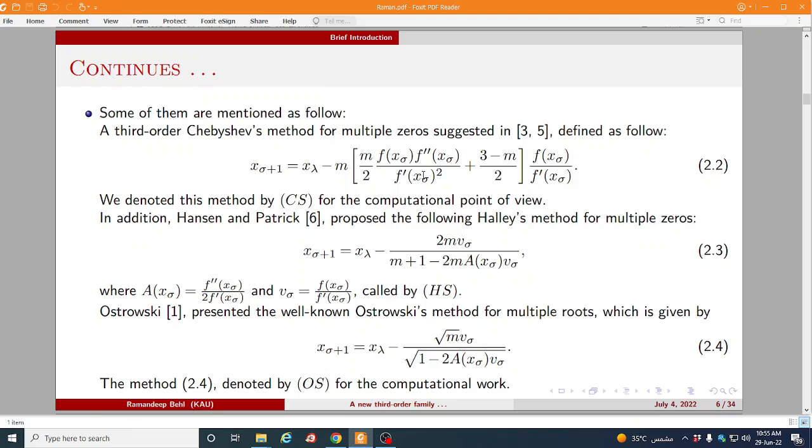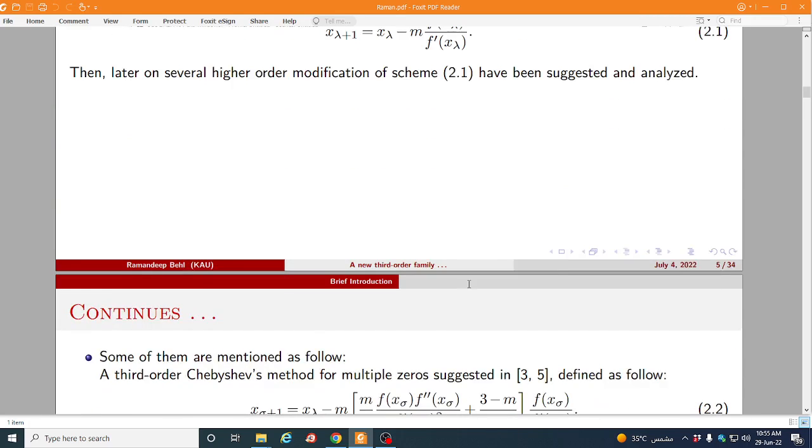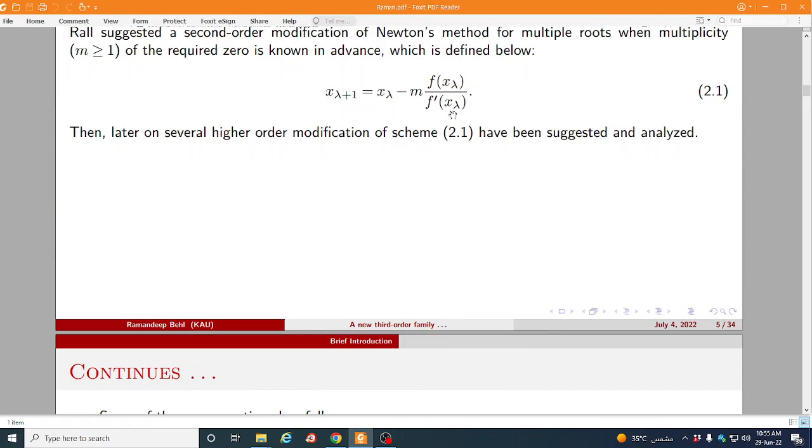Some of other scholars they also suggested higher order version of Newton method. Some of famous are mentioned here: a third order Chebyshev method 2.2, Hansen and Patrick they suggested Halley's method, Ostrovsky the well-known Ostrovsky method 2.4, Osada also suggested a third order method 2.5, and Chun also suggested a third order scheme. Chun and Nita also suggested third order scheme in 2.6.